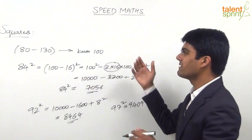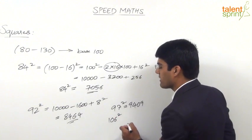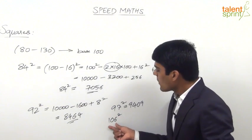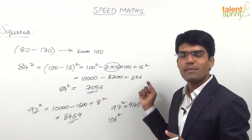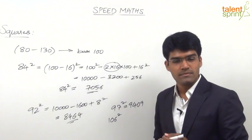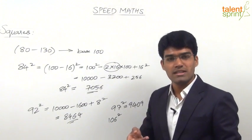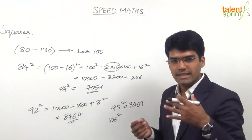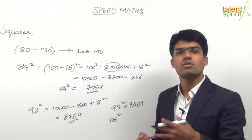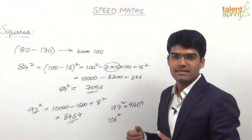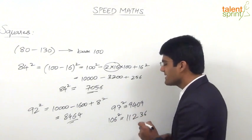Let us see what happens if we cross 100. For example, we have to find out 106 squared. 106 is nothing but 100 plus 6. So as per the expansion, the first term is 10,000. The second term — because it is plus 6, we take double, which is plus 1,200. So 10,000 plus 1,200 is 11,200, plus 6 squared which is 36, giving us 11,236.